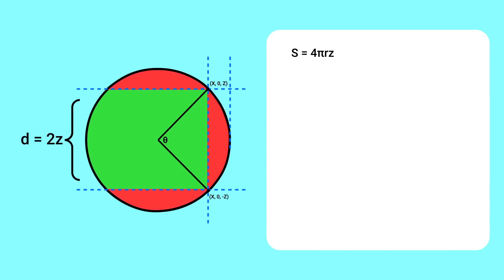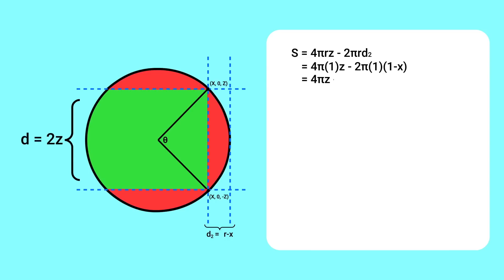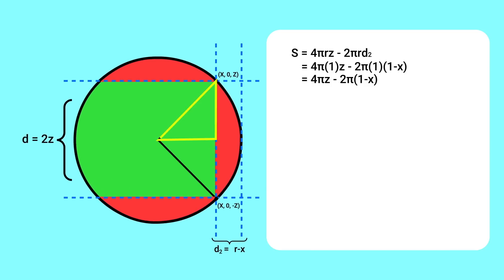Imagine another plane on the right tangent to the sphere. The formula still applies: the surface area of that red cap is 2πr·d2, where d2 is r minus the x coordinate. Setting the radius to 1, we have the expression for the green area. If we make a triangle where that base angle is theta over 2, we can calculate x and z in terms of theta. Since the radius is 1, z equals sine of (theta/2) and x equals cosine of (theta/2). Plugging those in, we have our equation for the winning surface area as a function of theta.